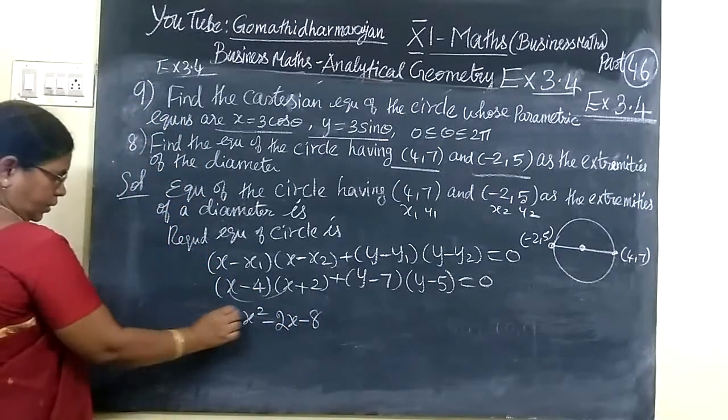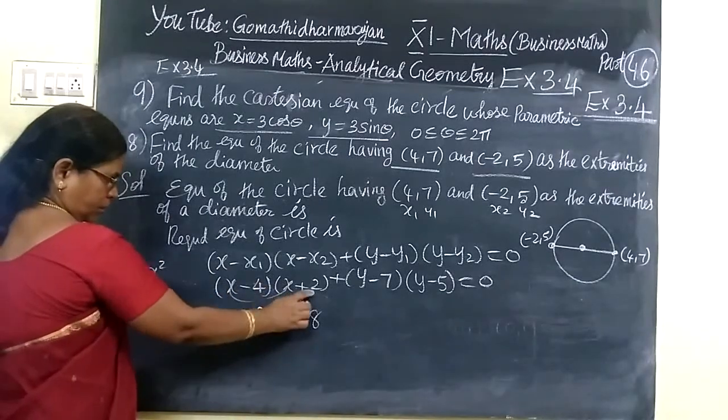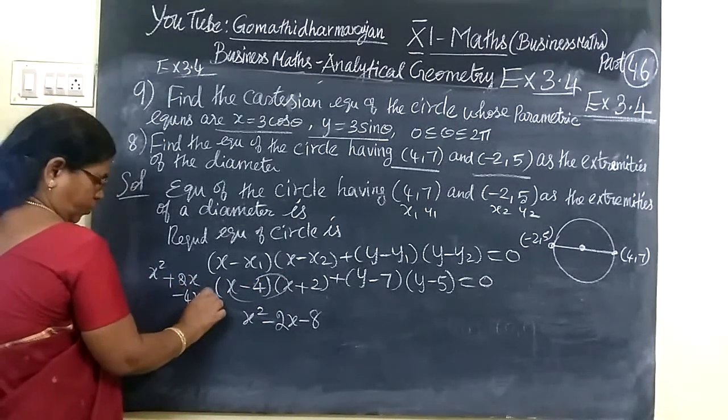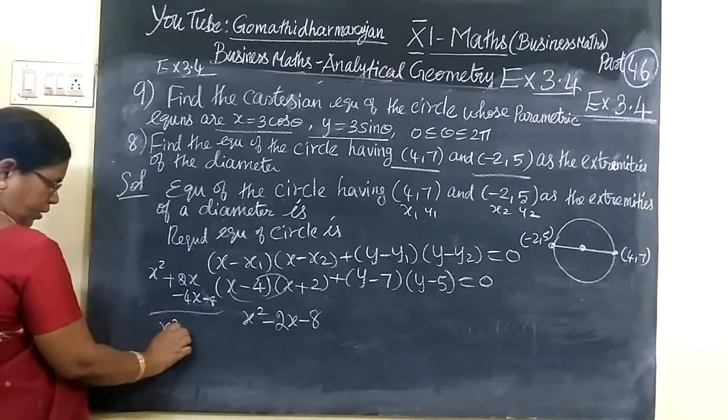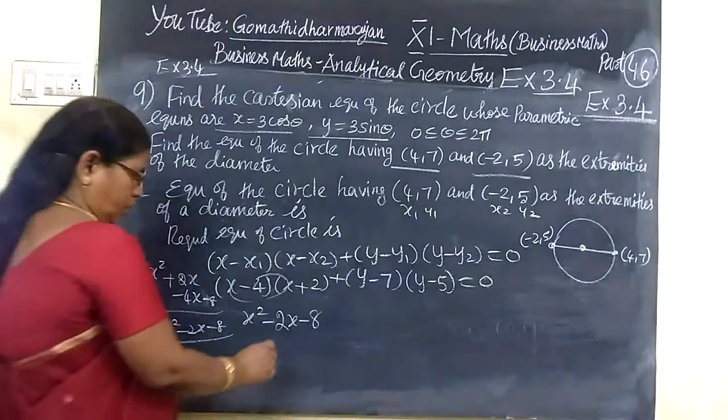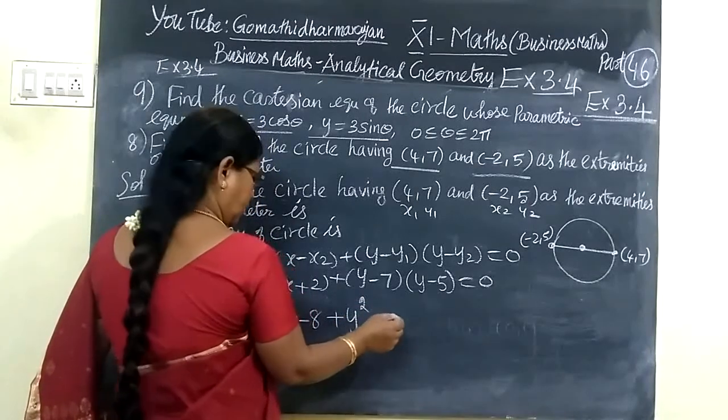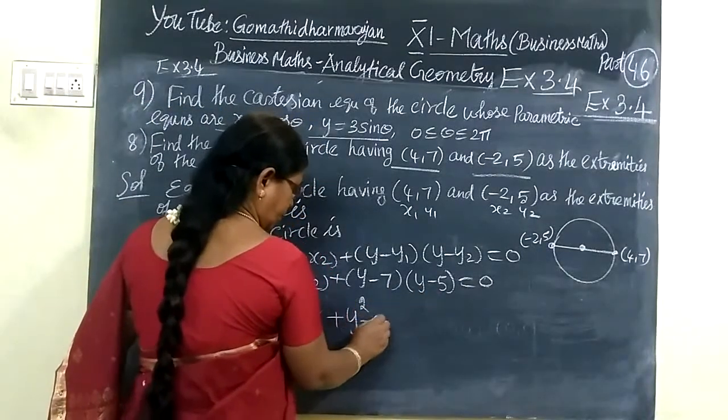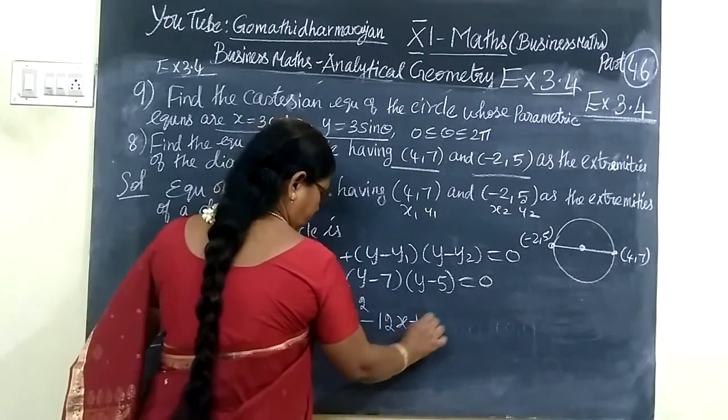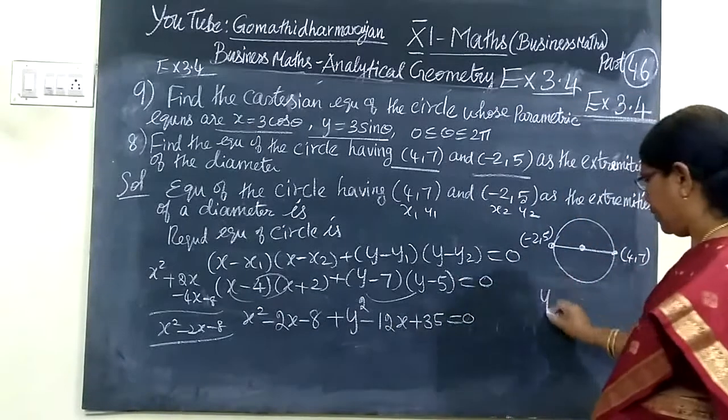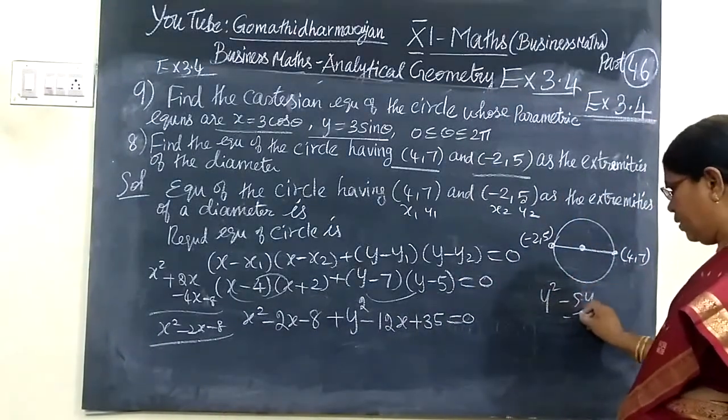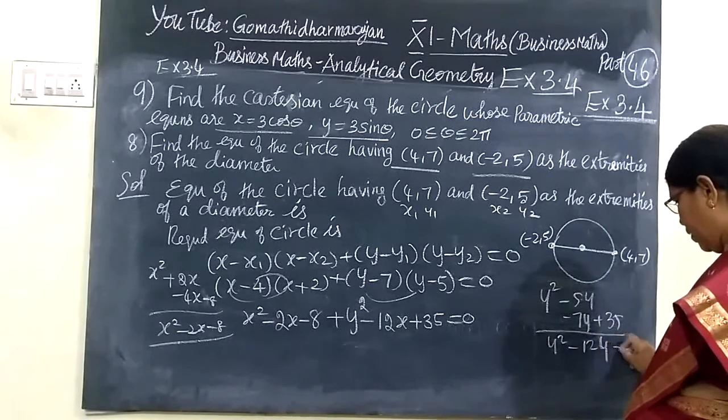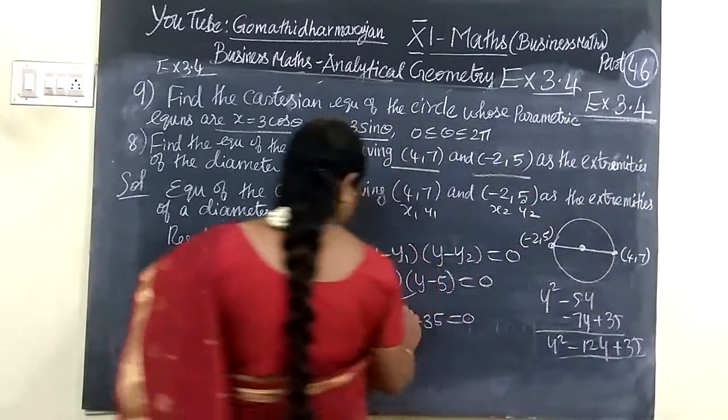So now we have x squared and this is the direct term minus 2x minus 8x. And this is x into x is x squared. And then here we have plus 2x minus 4x minus 8. So x squared minus 2x minus 8. Similarly here we are writing y squared minus 4 plus 2 minus 7. Then 35 equal to 0.